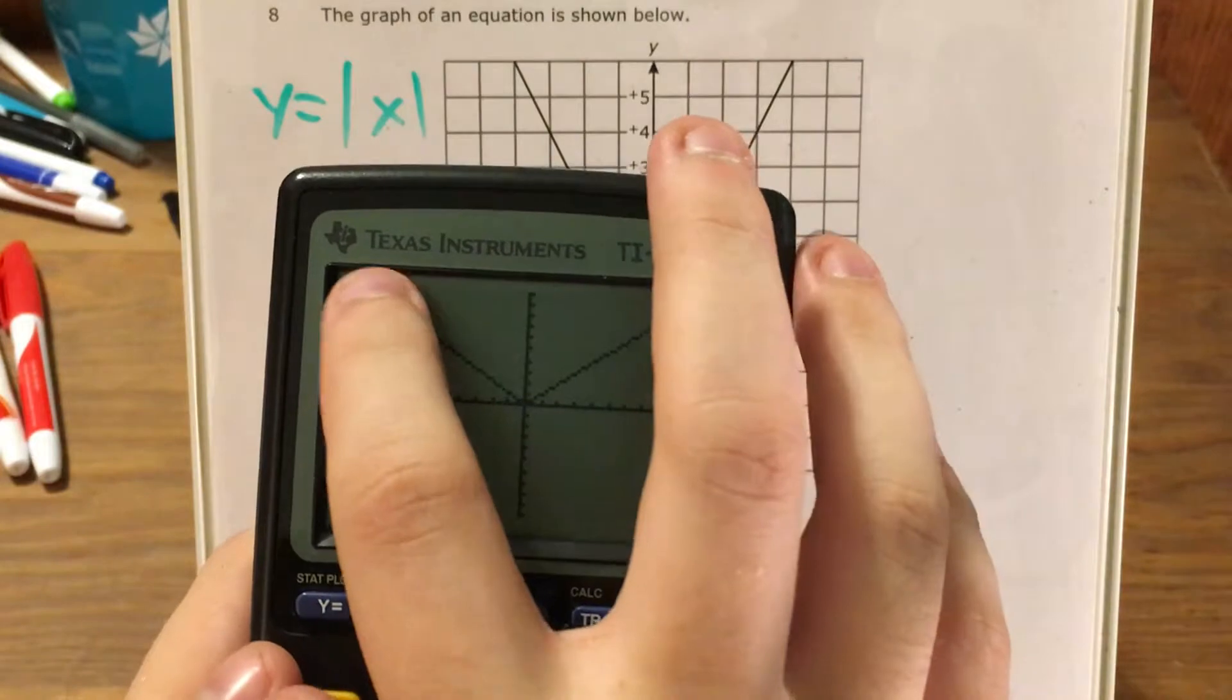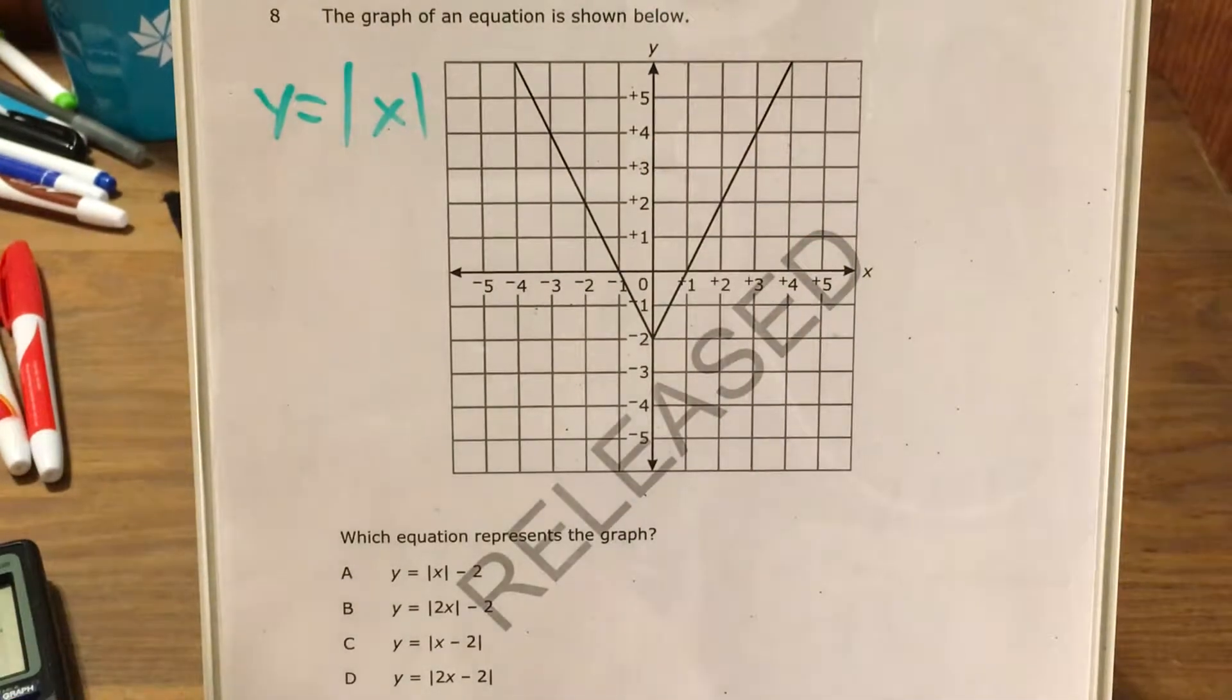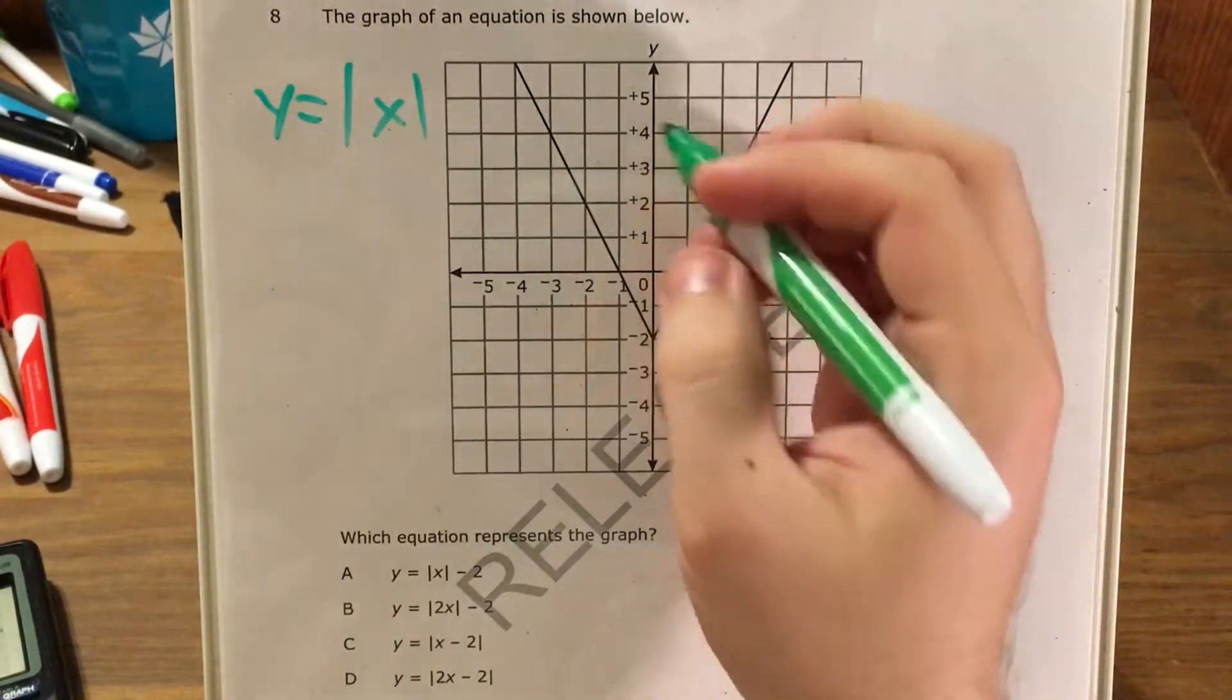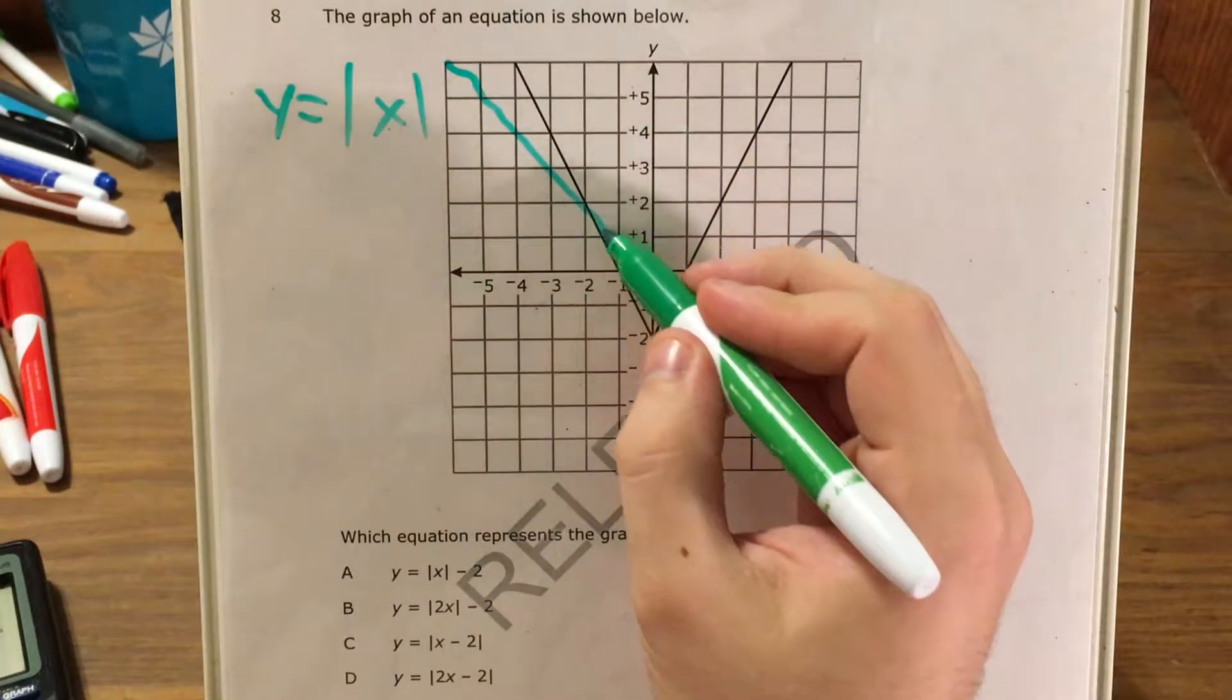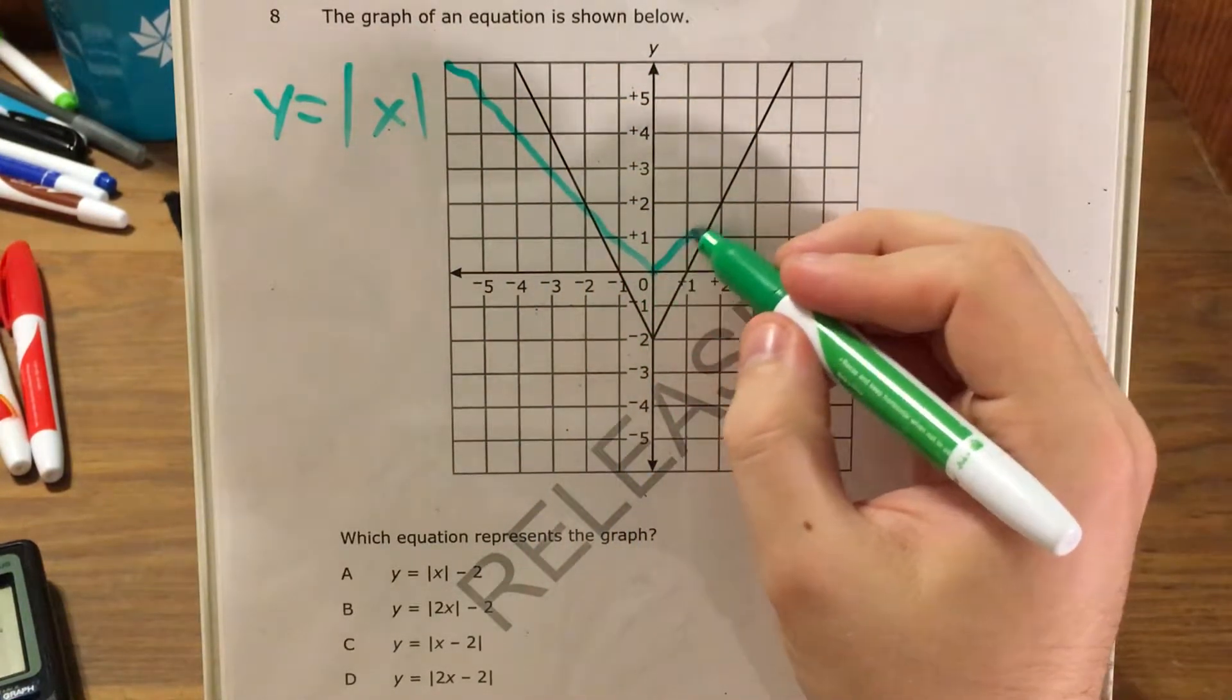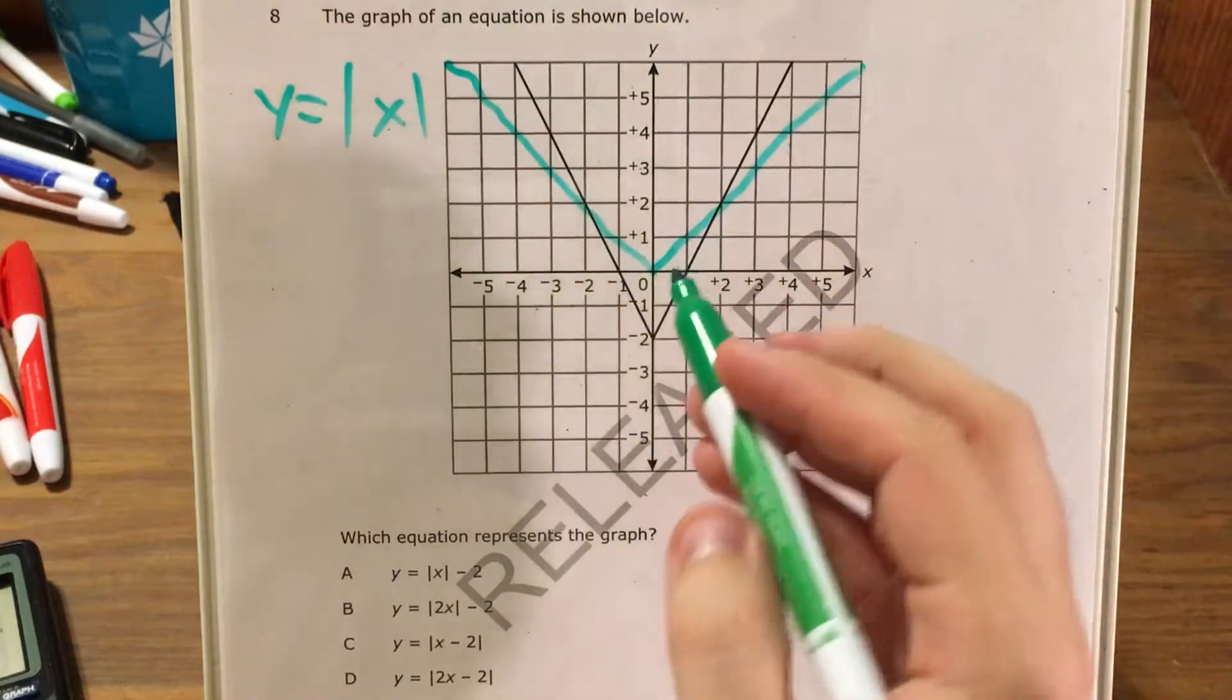This just looks like a V, and it's hitting right at this corner, so that tells me that it's just this V right here.